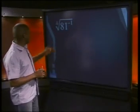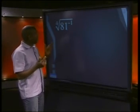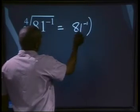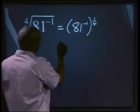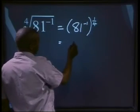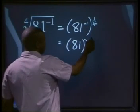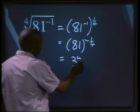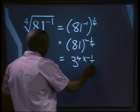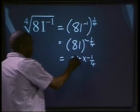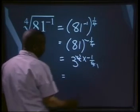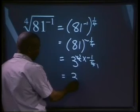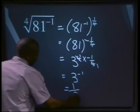Now for the last one. Can you simplify the 4th root of 81 to the power of minus 1? This can be written as 81 to the power of minus 1, all to the power of 1 over 4. Let's multiply minus 1 times 1 over 4, giving us 81 to the power of minus 1 over 4. Now 81 can be written as 3 to the power of 4. That means we multiply by minus 1 over 4. 4 into 4 is 1, giving us 1 times minus 1 divided by 1, which gives us negative 1. So we have 3 to the power of minus 1, which equals 1 over 3.